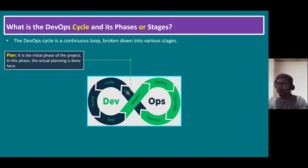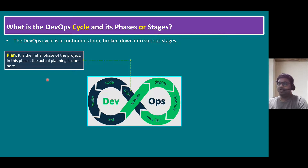The first stage is Plan — the initial phase of any project where actual planning is done. For example, if I want to deploy a Tanzu Kubernetes cluster, before deploying it we should prepare a plan: whether we deploy Tanzu on the vSphere level or on a VCF (VMware Cloud Foundation) level. We decide the target environment in the initial plan.